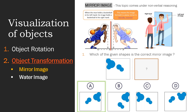The answer is A. The shapes on the left side of the box in the question figure move to the right side of the box in the mirror image. This is how mirror image questions work out. There is also a trick you can use with rough paper during the exam.